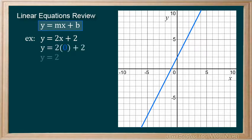When x is zero, y must equal b, which is 2 in our example. Shown on the graph is the point where the line passes through the y-intercept.